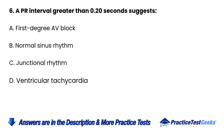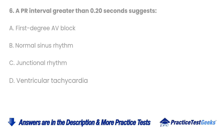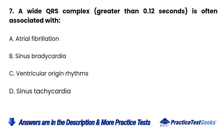6. A PR interval greater than 0.20 seconds suggests: A. 1st degree AV block. B. Normal sinus rhythm. C. Junctional rhythm. D. Ventricular tachycardia.